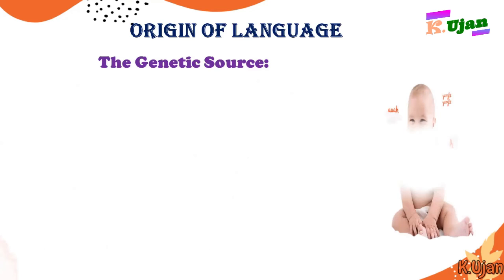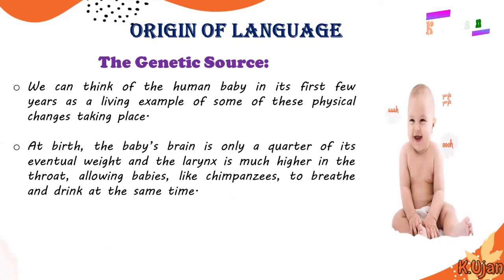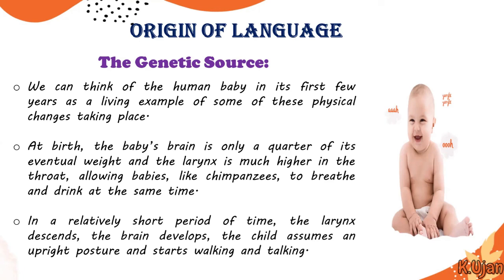Here is the genetic source. We can think of the human baby in its first few years as a living example of physical changes taking place. At birth, the baby's brain is only a quarter of its eventual weight, and the larynx is much higher in the throat, allowing babies, like chimpanzees, to breathe and drink at the same time. In a relatively short period of time, the larynx descends, the brain develops, the child assumes an upright posture, and starts walking and talking — something genetically possessed by human beings.